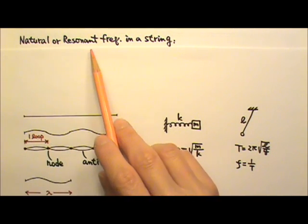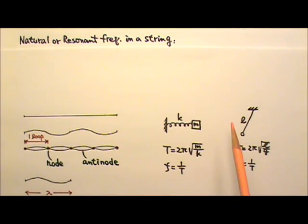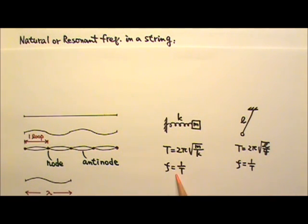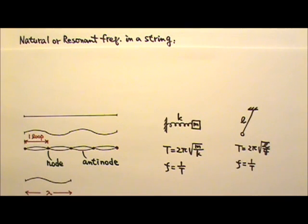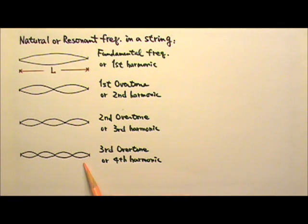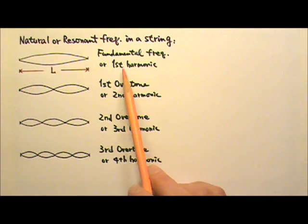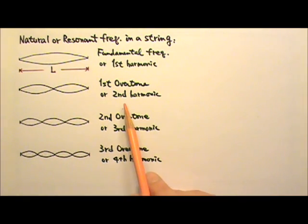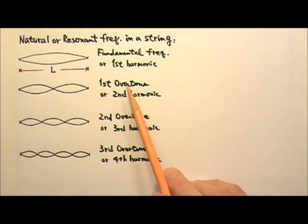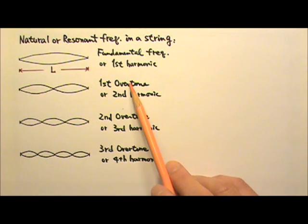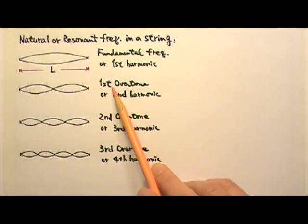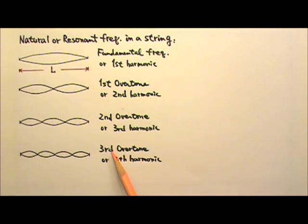Now let's look at the natural or resonant frequencies in a string. Unlike a spring-mass system or a simple pendulum that only has one period and therefore one frequency, a string can have an infinite number of resonant frequencies. A string can oscillate in one, two, three, or any whole number of loops. The lowest resonant frequency has one loop and it is called the fundamental frequency or first harmonic. Two loops would be the second harmonic, three loops the third harmonic, four loops the fourth harmonic, etc. If we count the overtones, we only start after the fundamental frequency, so the second harmonic is the first overtone, the third harmonic is the second overtone, and then the third overtone.